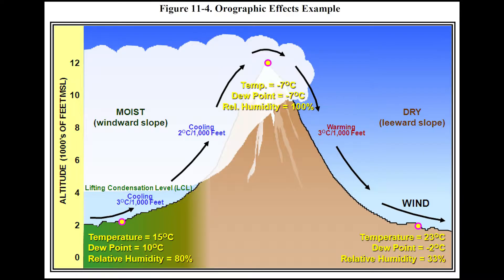They also discuss orographic lifting in figure 11-4 — air being lifted as it blows over terrain. You see wind blowing up a slope, and as the air gets lifted by the ground, it'll reach a point where the temperature-dew point spread reaches zero and you get condensation — called the lifting condensation level. As the air continues blowing up the slope, clouds form from a certain point on the mountain all the way up to the top.